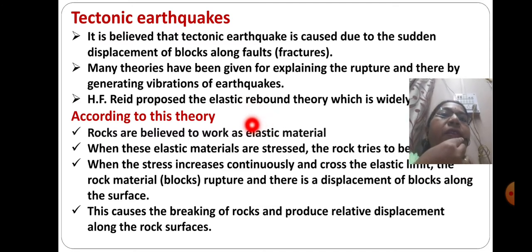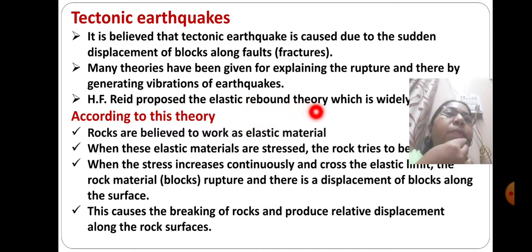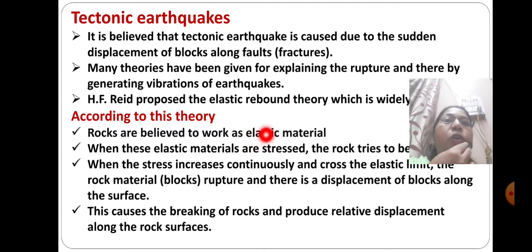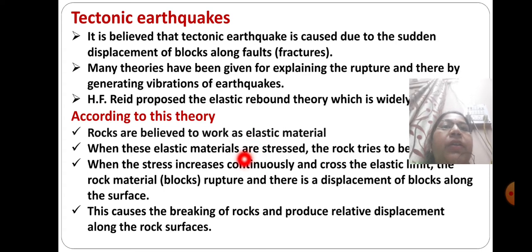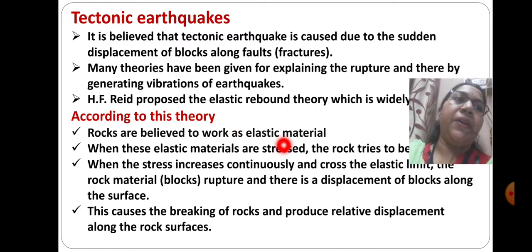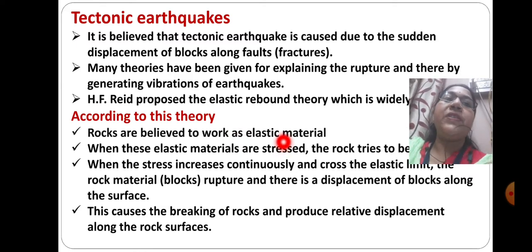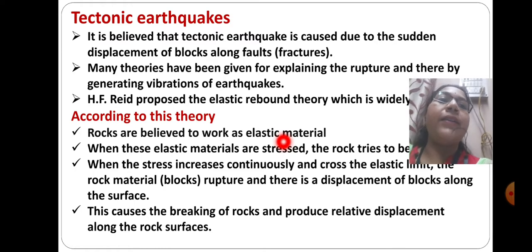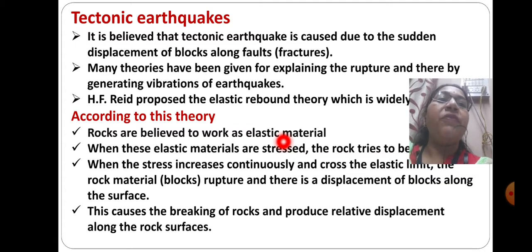The elastic rebound theory is widely used for this. The tectonic earthquake can be explained on the basis of the rebound theory. According to this theory, rocks are believed to work as elastic material. The easiest examples of elastic material are rubber and glass — these are materials which regain their original shape and size after removal of an external deforming force.